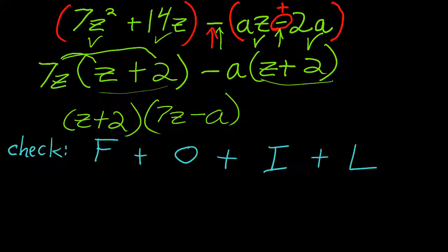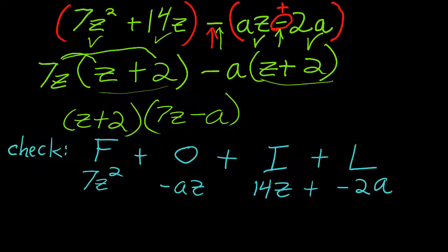Z times 7Z is 7Z squared. Outside, Z times negative A is negative AZ. Inside, two times 7Z is 14Z. And last, two times minus A is negative 2A. And there are the plus signs in between.